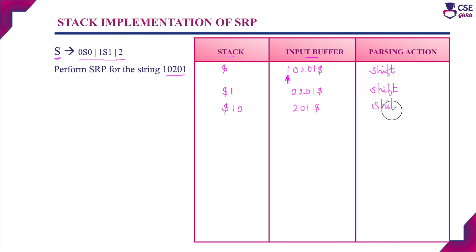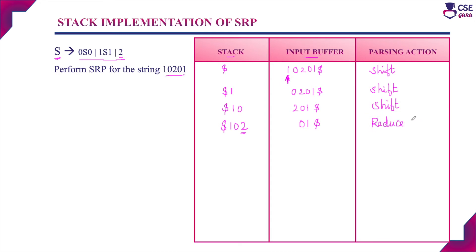In the next step we will shift the next element into the stack. The next element is 2, so the top element of the stack is now 2. We check for a handle — it may be 2, or 0 2, or 1 0 2. The handle may be a substring or the complete string. The remaining elements in the input buffer are 0, 1. Since 2 is a handle and there is a matching substring for 2, in this step we can reduce 2 to S. That is S derives 2 — we replace 2 with S.